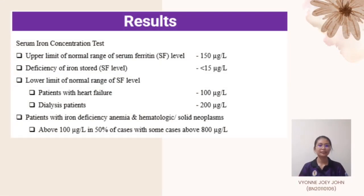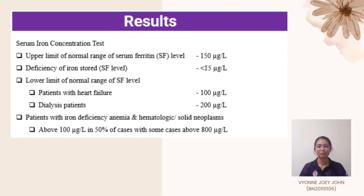I will now talk about the results of our findings. For the serum iron concentration test, the upper limit for the normal range of serum ferritin level is 150 micrograms per liter. For patients with deficiency of iron stores, the serum ferritin level will be less than 15 micrograms per liter. For patients with heart failure, it will be around 100 micrograms per liter, and for dialysis patients, around 200 micrograms per liter. For patients with iron deficiency anemia and hematologic or solid neoplasms, they will have above 100 micrograms per liter in 50% of cases, and some cases will have around 800 micrograms per liter.